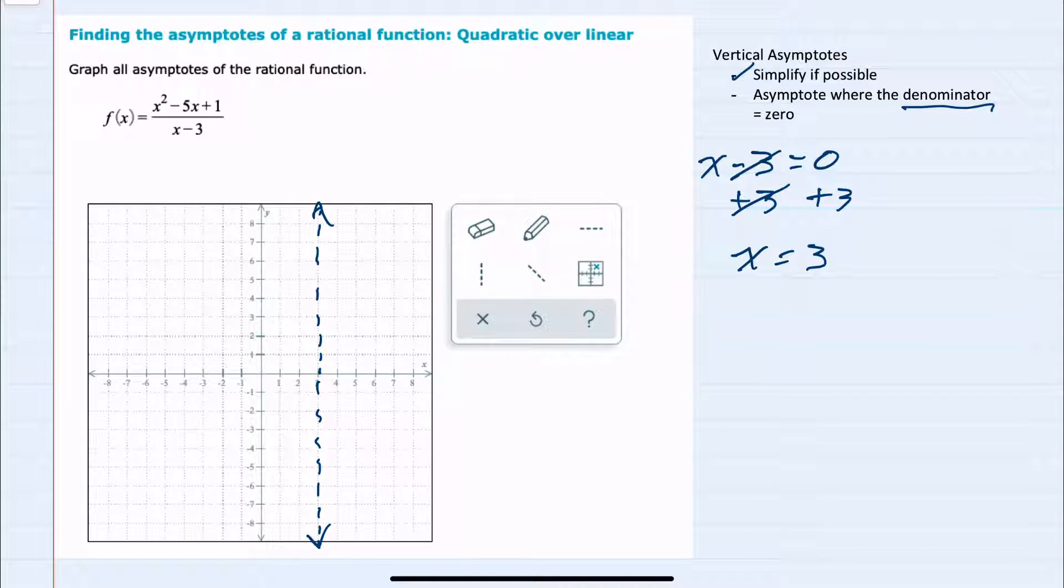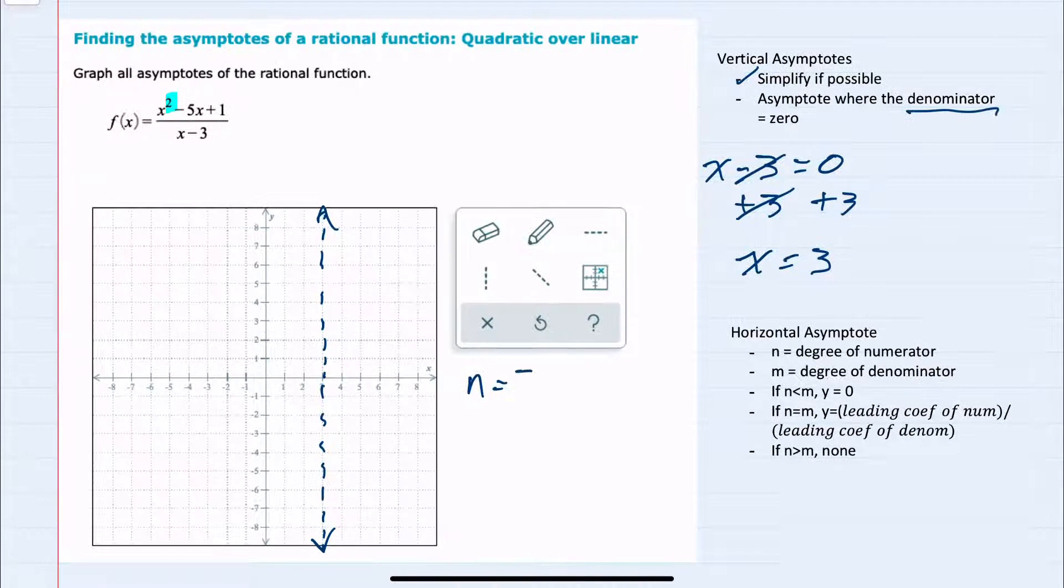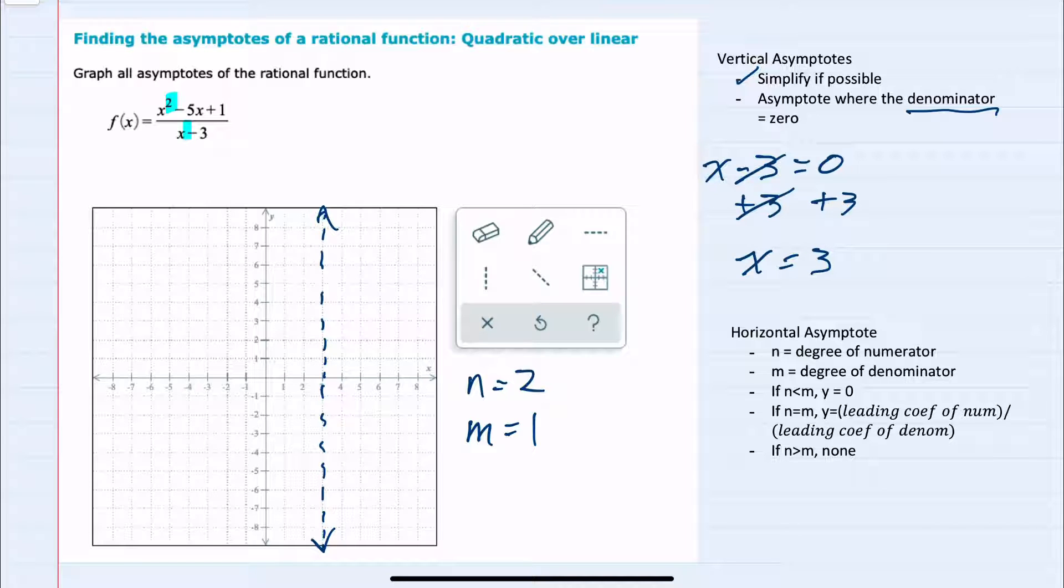So we found our vertical asymptote. I'll now move to horizontal asymptotes. For horizontal asymptotes we'll start by looking at the degree of the numerator and the degree of the denominator. In this example, the degree of the numerator is 2 and the degree of the denominator is 1. So having found those, I can tell that n is greater than m, and that when n is greater than m there is no horizontal asymptote.